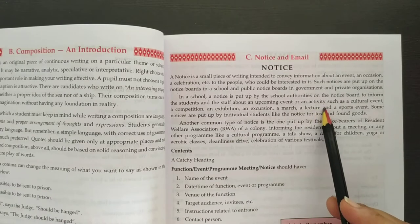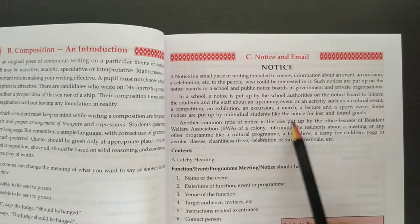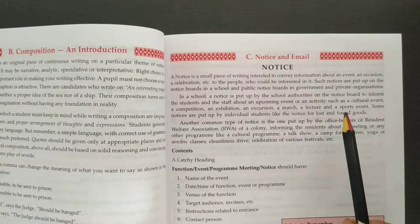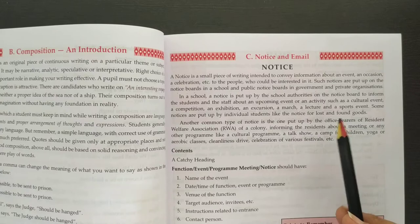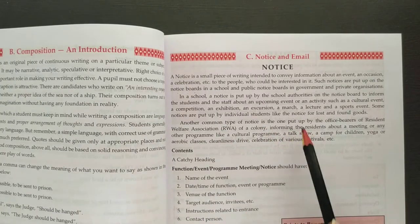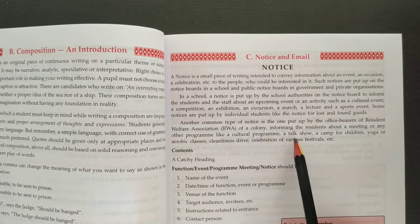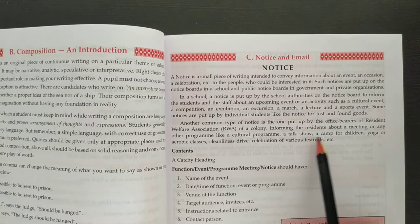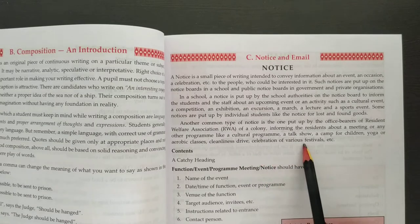You also put up a notice about things you have lost. Sometimes you have lost your book, or some accessory in the school — then you have to make a notice at the notice board for lost and found goods. Another common type of notice is one put up by the office bearers of a residents' welfare association, informing residents about a meeting or any other program like a cultural program, a talk show, a camp for children, yoga or aerobic classes, cleanliness drive, or celebration of various festivals.